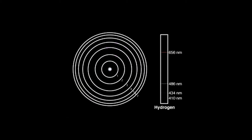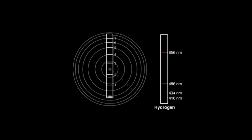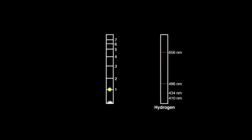A cross-section of an atom shows the energy levels similar to the rungs of a ladder. When energized, the electrons move temporarily to higher energy levels. As the electrons fall back to lower energy levels, they lose energy in the form of light, which produces the characteristic spectrum of the elements.